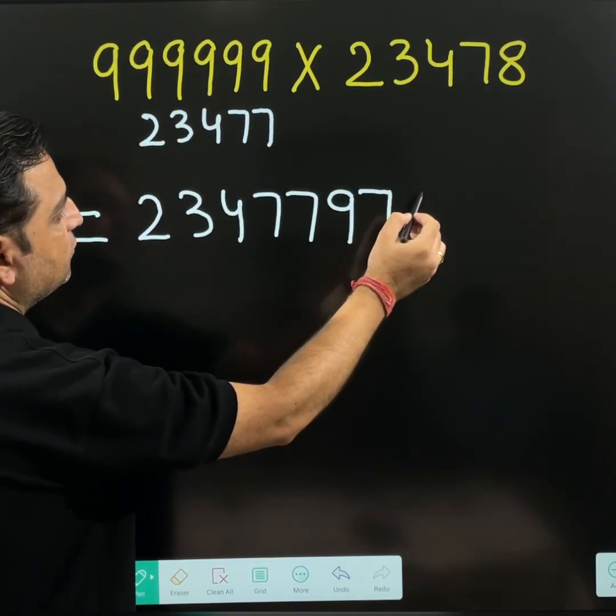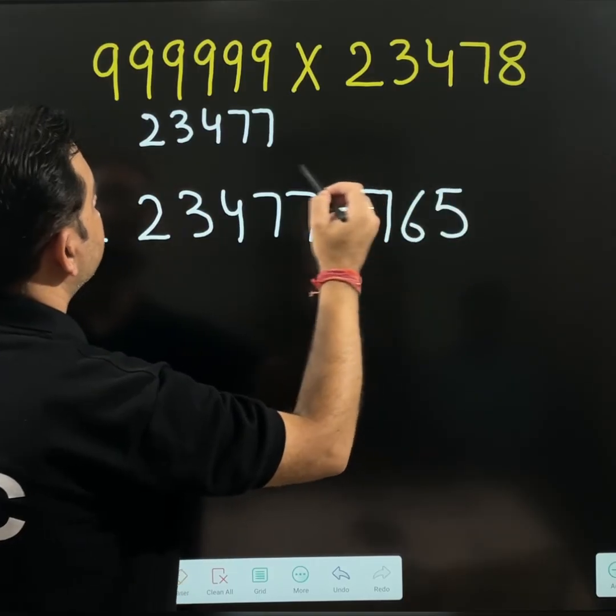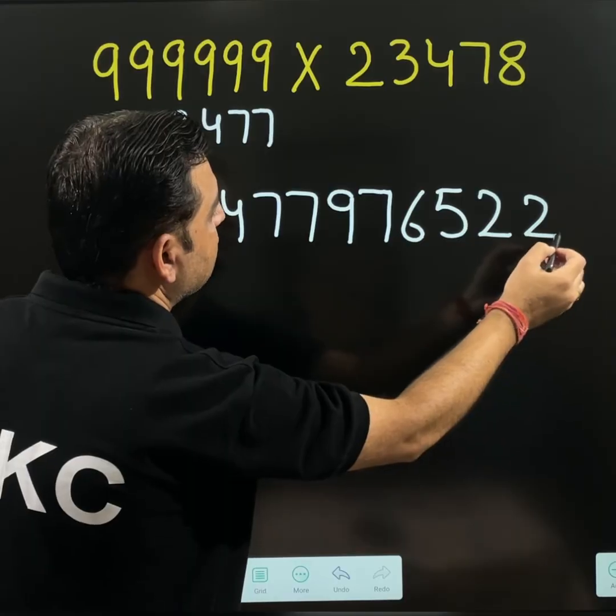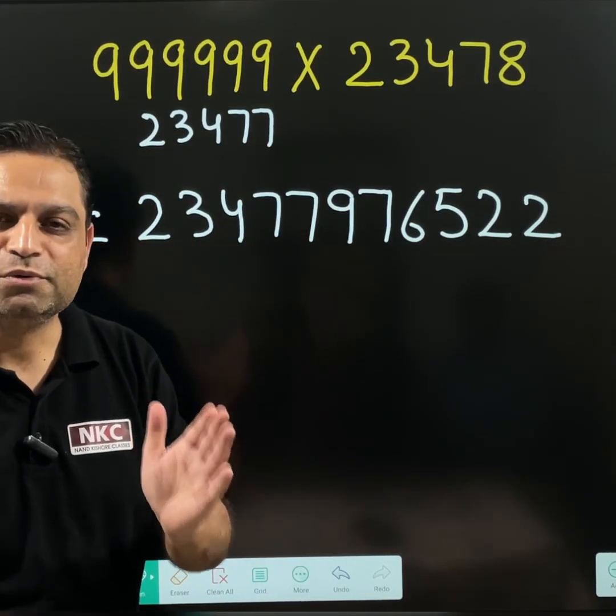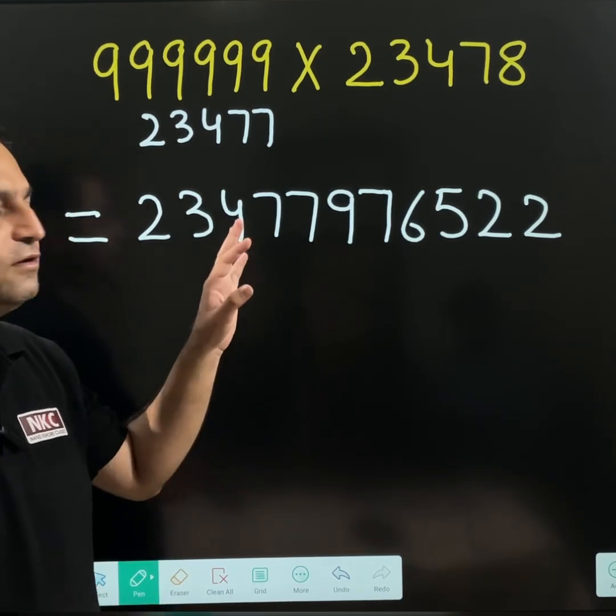9 minus 7 is 2 and at the end 9 minus 7 is again 2. See what a big number it is. But calculation becomes very easy. I hope you are able to understand the concept.